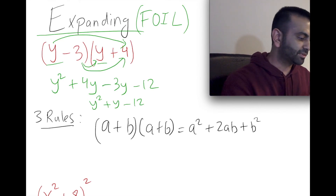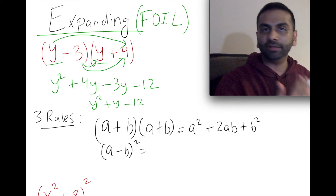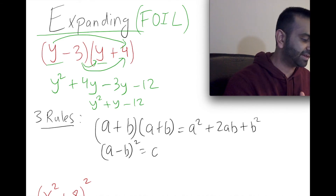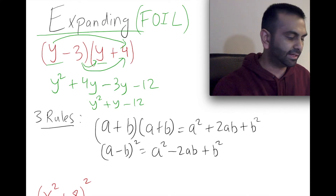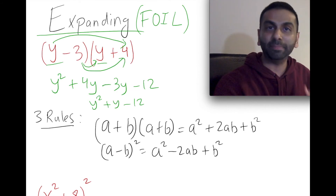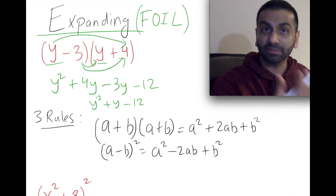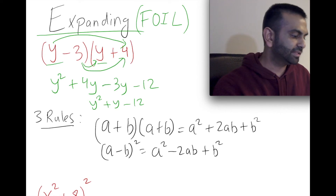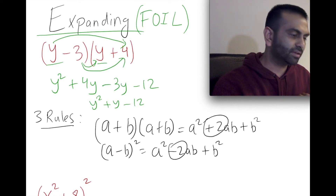Rule two: (a − b)² similarly expands to a² − 2ab + b². A common mistake is writing −b² at the end, but negative b times negative b is positive, so it's always +b². The only difference between (a + b)² and (a − b)² is that the middle term is plus 2ab versus minus 2ab.